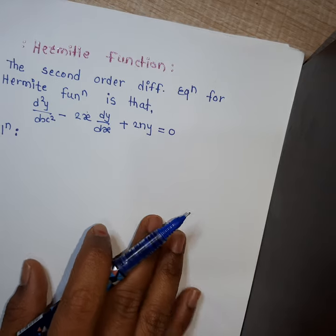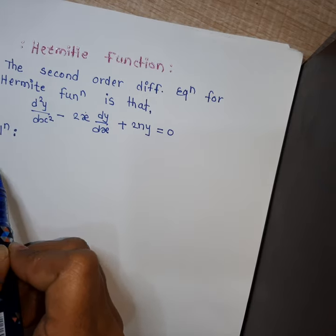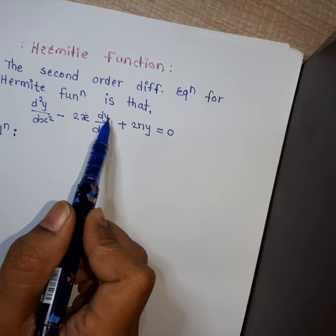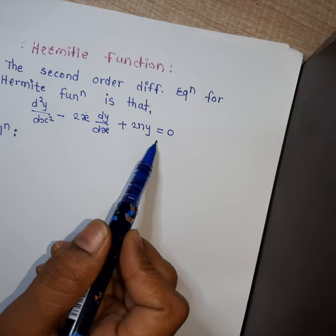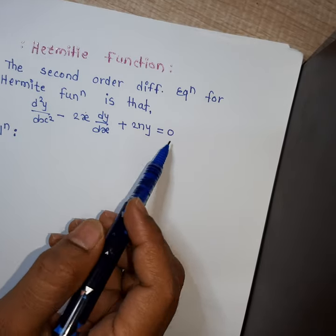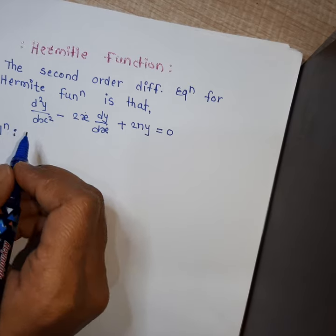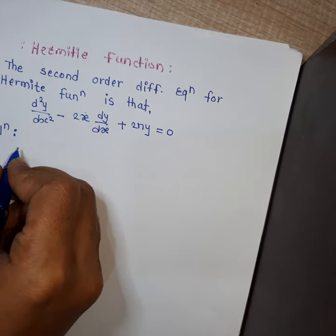The second order differential equation for the Hermite function is: d²y/dx² minus 2x dy/dx plus 2ny equals 0. The solution for the Hermite function is found using a series method.